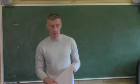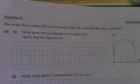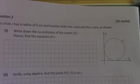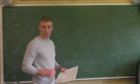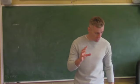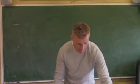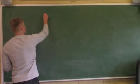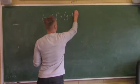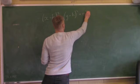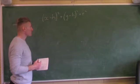I'm going to look at a mock question from the 2018 mock paper. The circle has a radius of 5 cm and touches both the x axis and the y axis. Write down the coordinates of the centre and hence find the equation of C. Straight away I'm going to write out the formula: x minus h squared plus y minus k squared equals r squared.